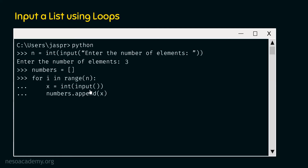For the second iteration, the input is 48. We typecast it and x points to 48. With numbers.append(x), we add 48 at the end of the list — now the numbers list has two items: 67 and 48. We can accept the third input the same way. After completing the for loop, we hit enter twice to exit the loop. We then type our inputs: 67, 48 and 90.